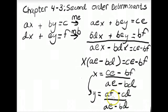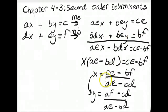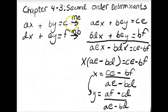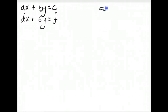A couple of things to notice about these two equations: first, both denominators are the same for X and Y — it's going to be AE minus BD. Second, the numerator for X does not contain X coefficients; the X coefficients were A and D, yet the numerator contains C and B. Similarly, the numerator for Y does not contain Y coefficients.